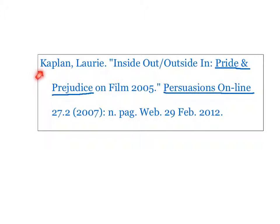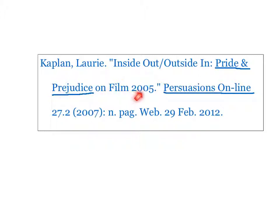Here's the author's name, which has been reversed with a comma and a period after it. The title of the article goes in quotation marks. I keep the same punctuation that the title shows on the front page. It's followed by a period and a close quotation mark.